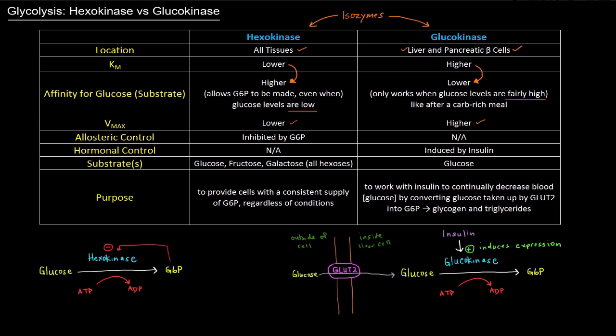As far as allosteric control, hexokinase is allosterically inhibited by its product, glucose 6-phosphate (G6P). G6P feeds back negatively on hexokinase and inhibits its activity. So if there's a buildup of glucose 6-phosphate in the cell, hexokinase will decrease its activity.